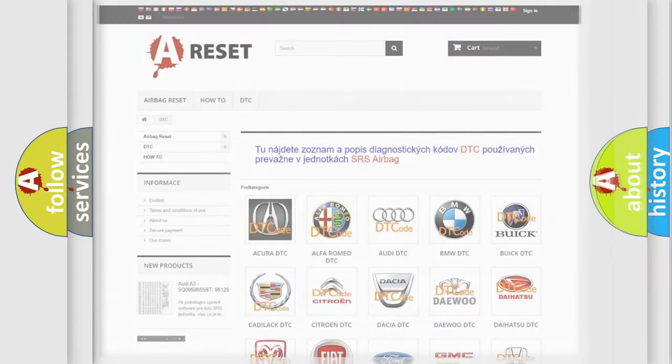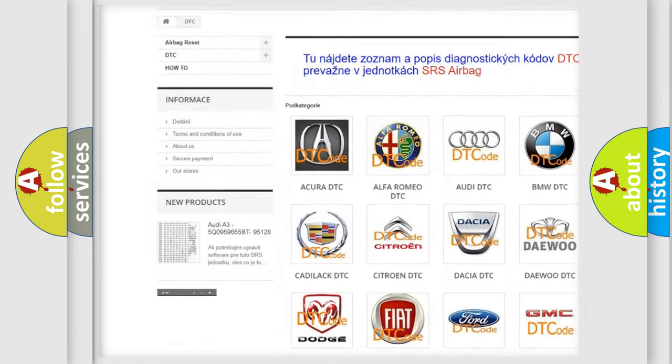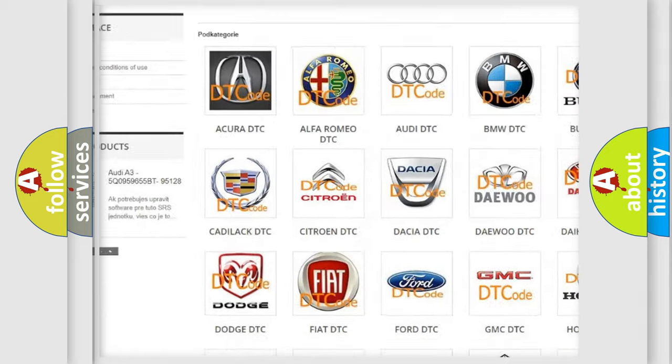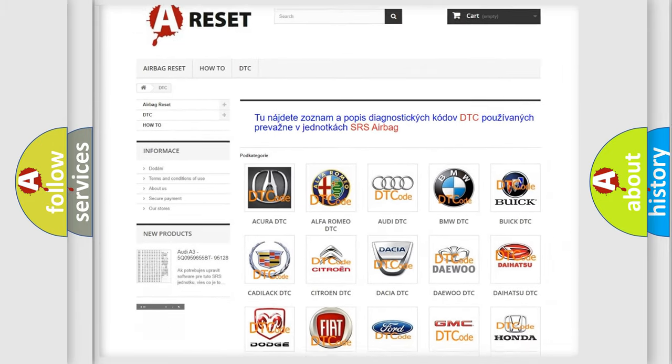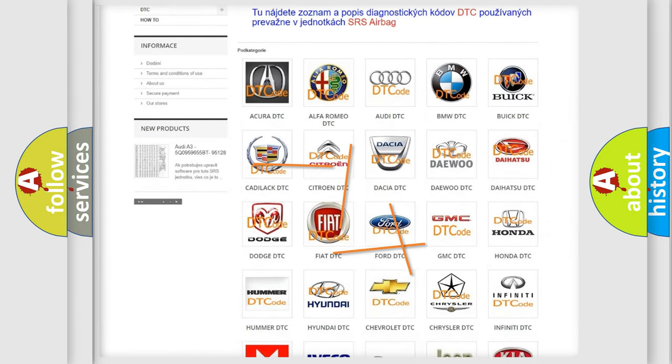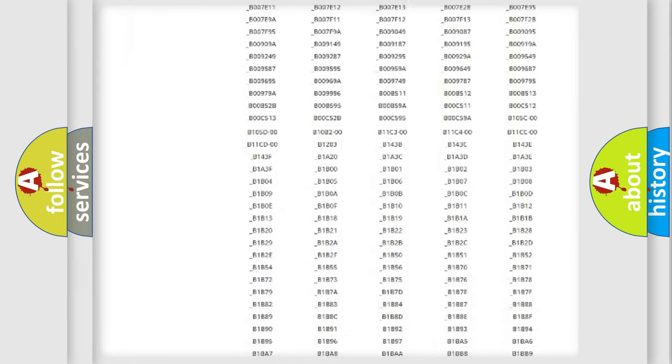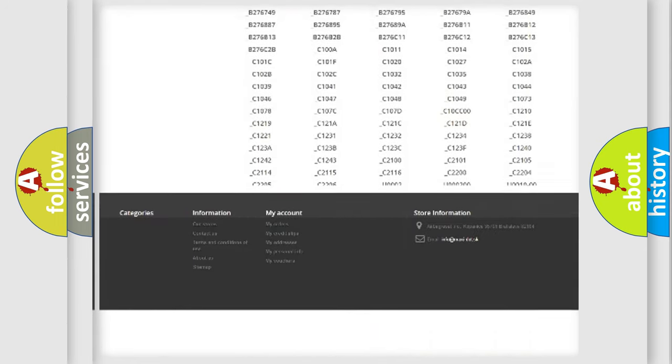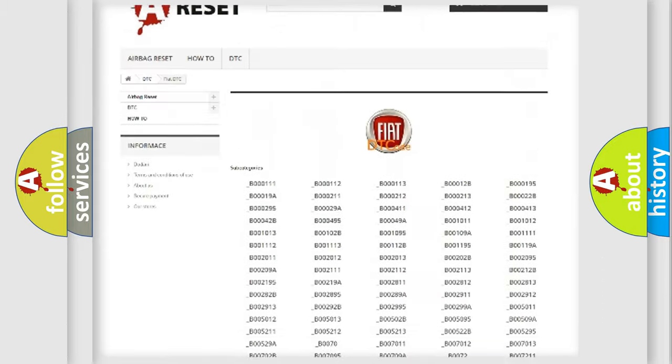Our website airbagreset.sk produces useful videos for you. You do not have to go through the OBD2 protocol anymore to know how to troubleshoot any car breakdown. You will find all the diagnostic codes that can be diagnosed in Fiat vehicles.